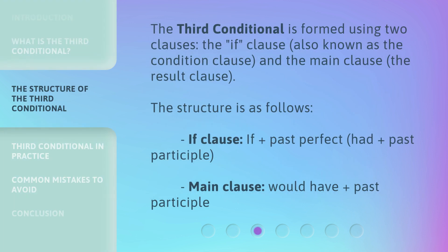The third conditional is formed using two clauses: the if clause, also known as the condition clause, and the main clause, the result clause. The structure is as follows — if clause: 'if' plus past perfect (had + past participle); main clause: 'would have' plus past participle.